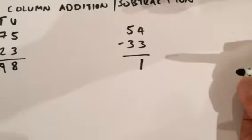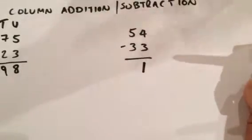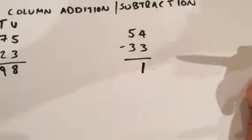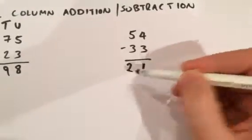And then 3 take away from the 5 would equal 2, because 3 and 2 would equal 5. Excellent.